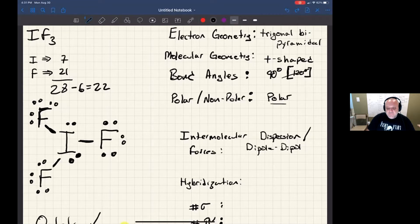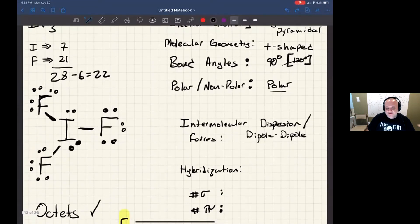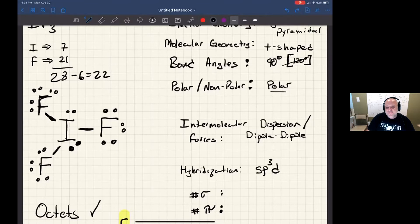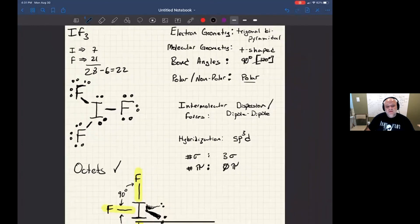Now again, the hybridization comes from the electron geometry, and the electron geometry is trigonal bipyramidal, and so that's an sp3d hybridization. Just like before, we've been counting single bonds as sigma bonds, so there's three sigma bonds. And since there are no double nor triple bonds, we have zero pi bonds. And that's it, that's IF3.